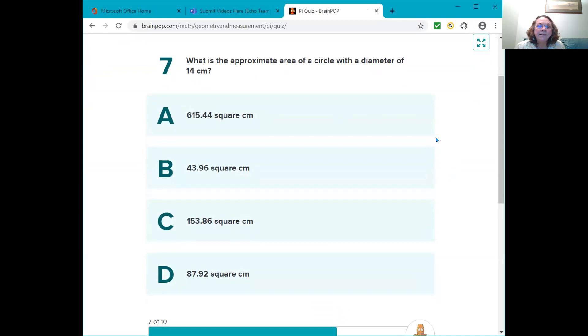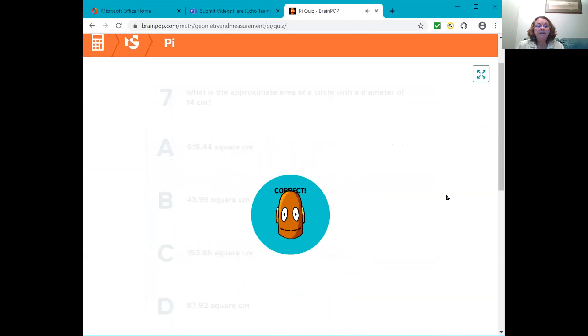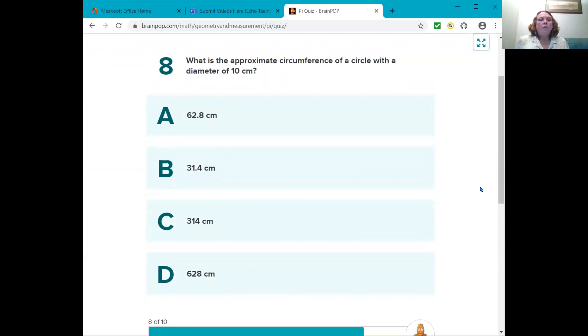Okay. Question seven. What is the approximate area of a circle with a diameter of 14 centimeters? I hope you jotted down how to work those out. So, is the answer A, 615.44 square centimeters? Is it B, 43.96 square centimeters? Is it C, 153.86 square centimeters? Or is it D, 87.92 square centimeters?